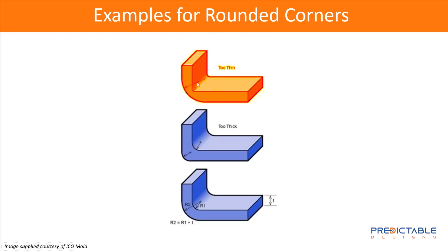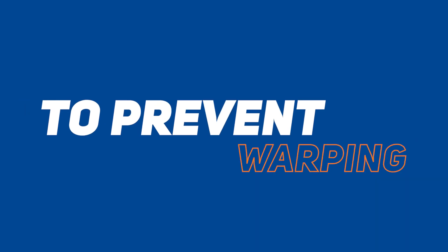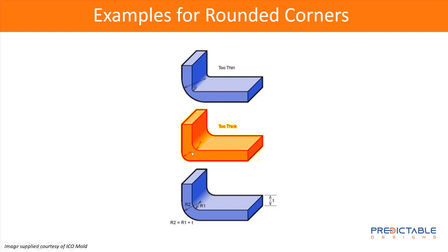If you have a thin section, it creates a bottleneck for the resin to flow. You don't want that. Here's another example where they've rounded both the inside and outside, but now you've got a thicker section, which violates uniform wall thickness. Here's the correct way to do it: the curve area maintains a constant wall thickness throughout.